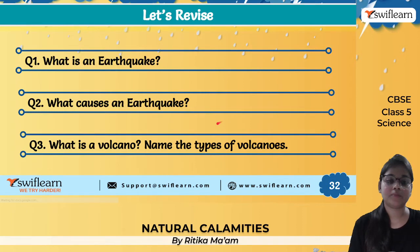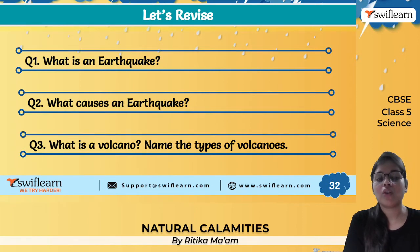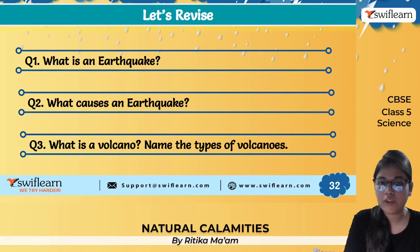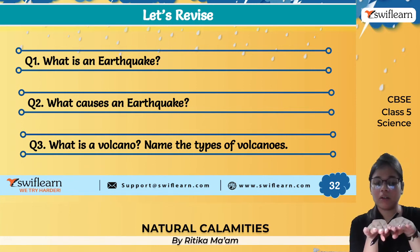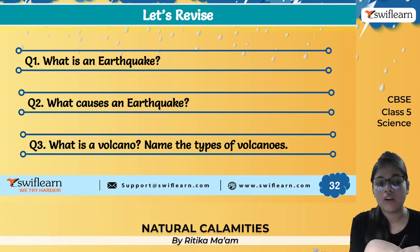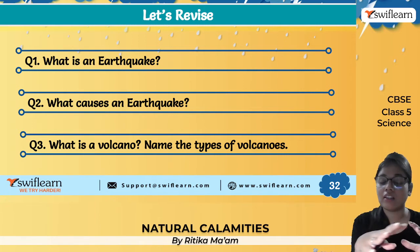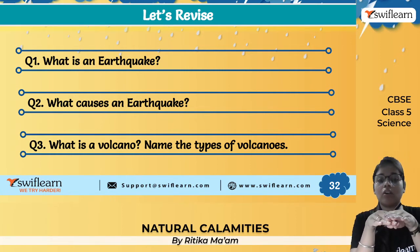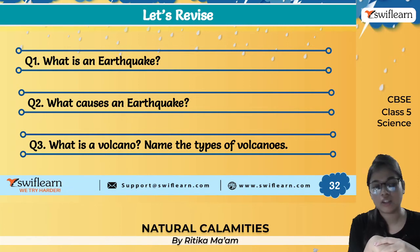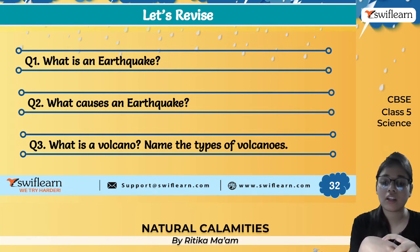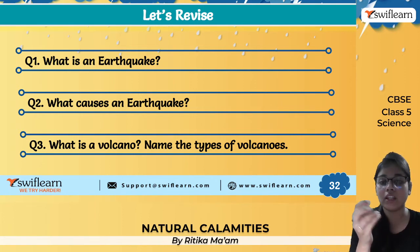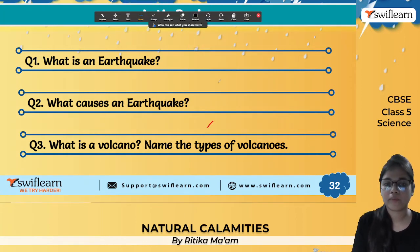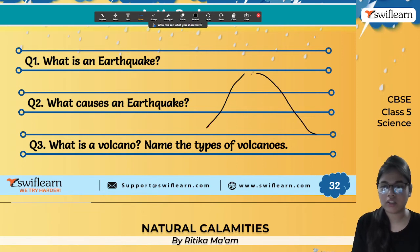Let us revise: What is an earthquake? An earthquake is a natural phenomenon that occurs when the tectonic plates — the plates on the earth's crust — pass over each other. How is an earthquake caused? The crust of the earth is made up of plates that are continuously moving. When these plates pass upon each other it leads to an earthquake. What is a volcano? A volcano is a kind of mountain or hill-like structure with a vent or opening from which molten rock and other materials come out.